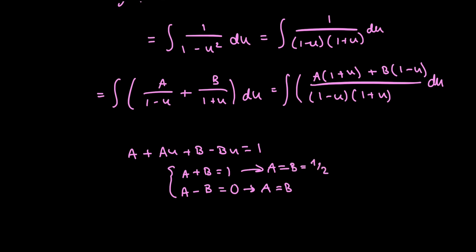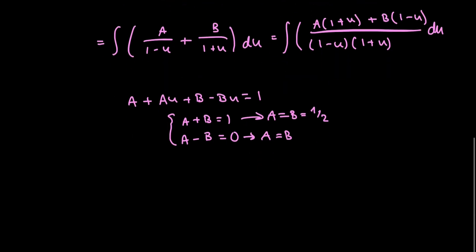And now replacing my result for my constants into the integral and also splitting up the integral, I can now come up with, and I'm also going to be taking out the constants outside of the integral. So I have 1 half integral of 1 over 1 minus u, plus 1 half integral of 1 over 1 plus u du.